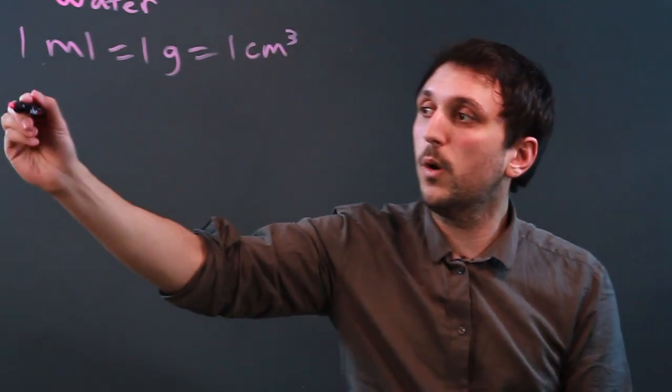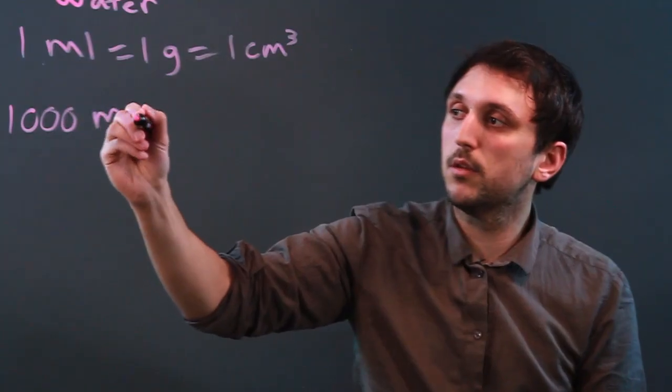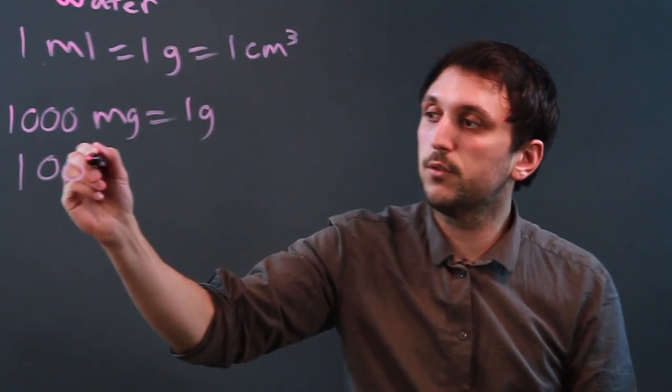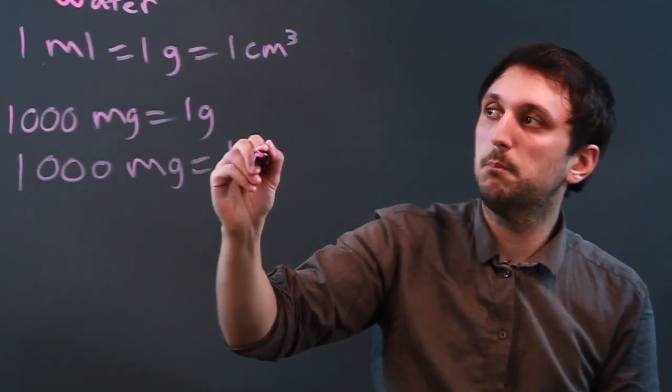So 1,000 milligrams equals one gram. So 1,000 milligrams equals one milliliter.